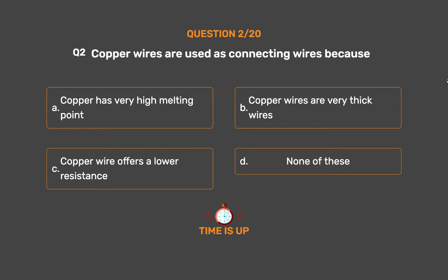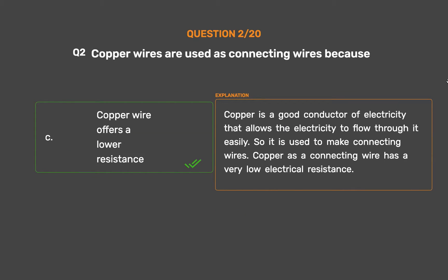The correct answer is Option C: Copper wire offers a lower resistance. Copper is a good conductor of electricity that allows electricity to flow through it easily, so it is used to make connecting wires. Copper as a connecting wire has a very low electrical resistance.